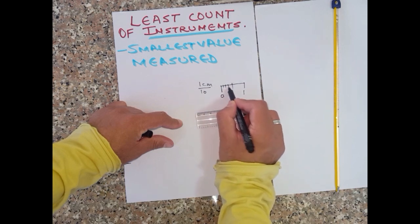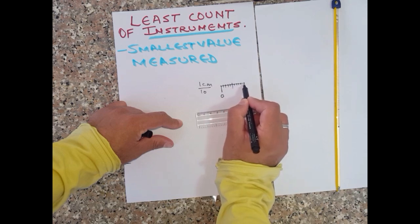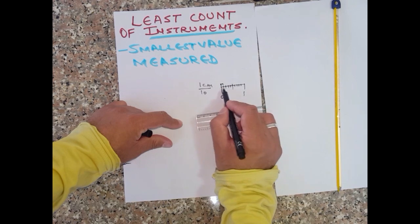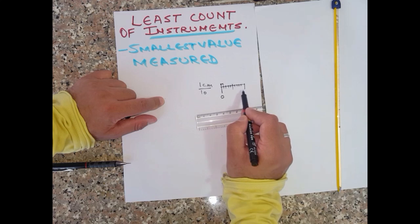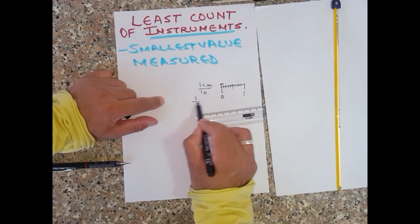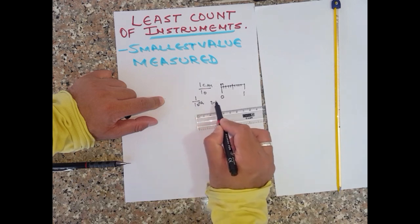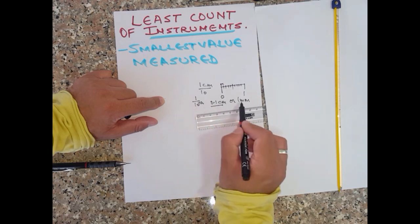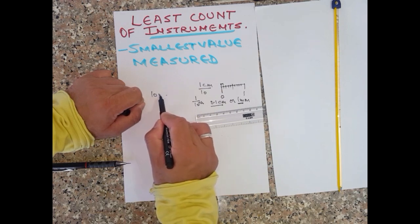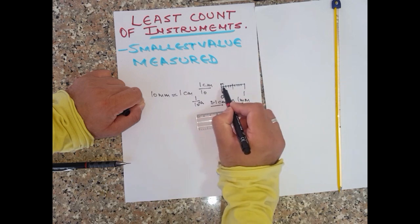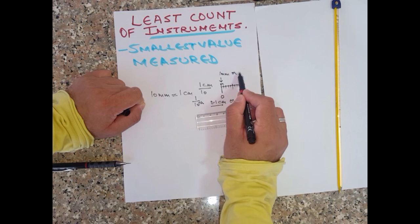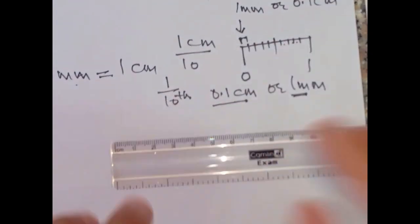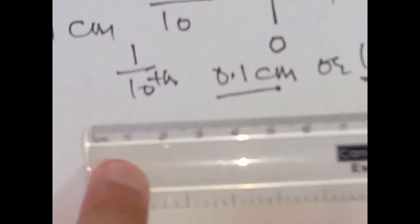So one centimeter is divided into 10 equal parts. The distance between each graduation — let's say from zero to one centimeter with ten divisions — means each part is one tenth of a centimeter, which is 0.1 centimeter or one millimeter. Ten millimeters make up one centimeter, so each division is one millimeter or 0.1 centimeter. The smallest value this scale can measure is the distance between two graduations.